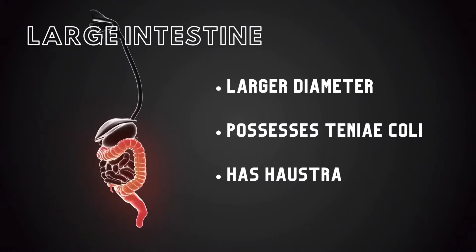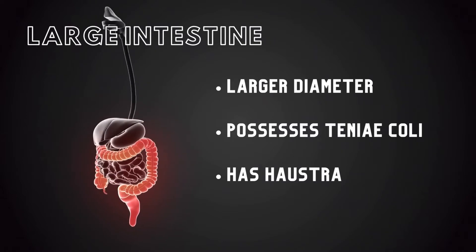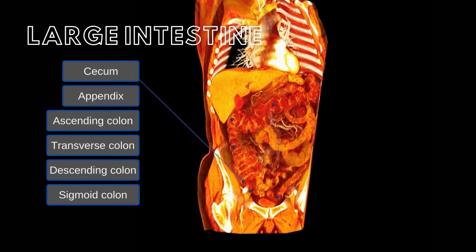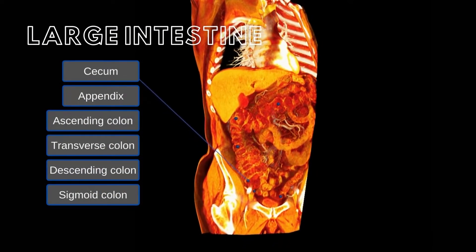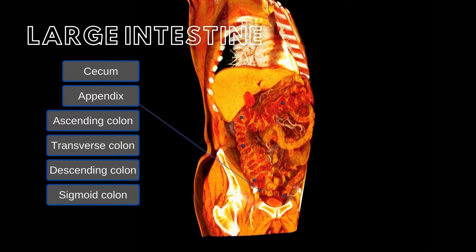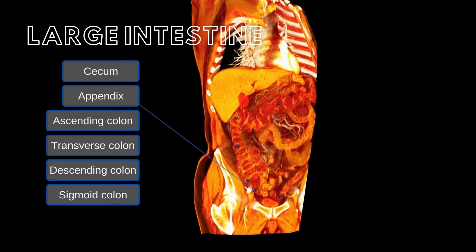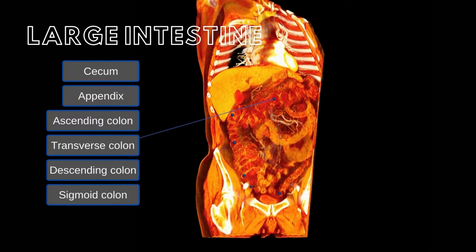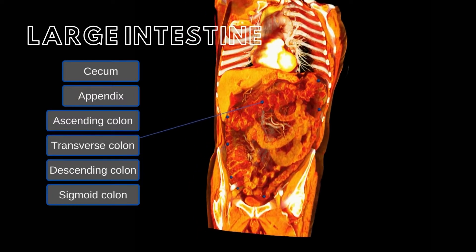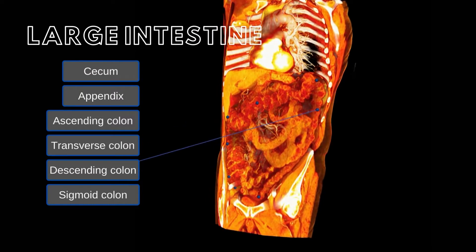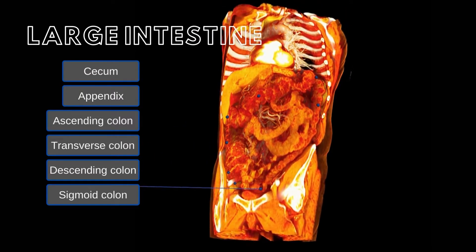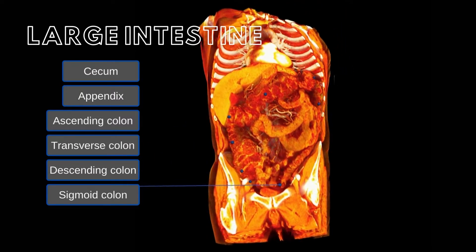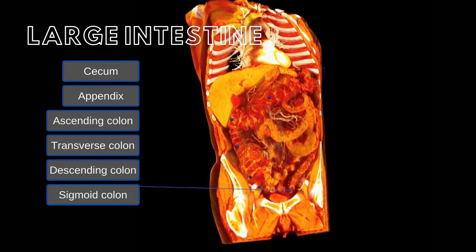The large intestine is subdivided into the following segments: the cecum and the associated appendix, ascending colon, transverse colon, descending colon, sigmoid colon, rectum, and anal canal.